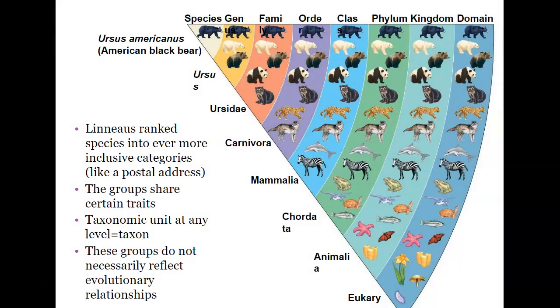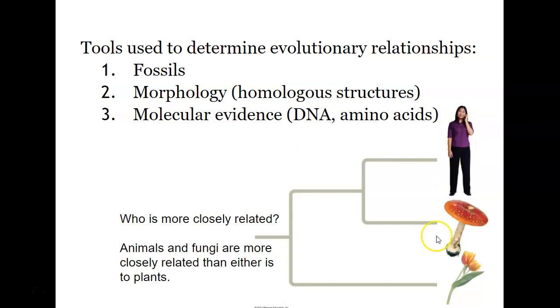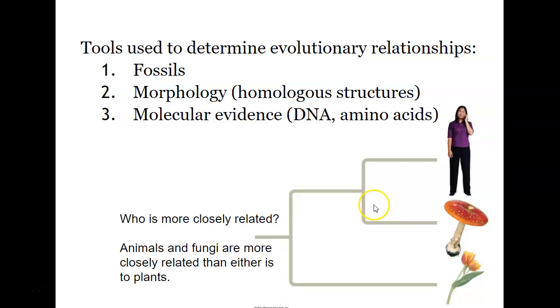Linnaeus ranked based on what they looked like and it does not necessarily reflect evolutionary relationships. Remember, we learned about convergent evolution, where organisms could look very similar but not because of evolution. We look at fossils, morphology like homologous structures, and DNA evidence. According to this picture, animals and fungi are more related than either are to a plant. Our branch point is more recent than with a plant.